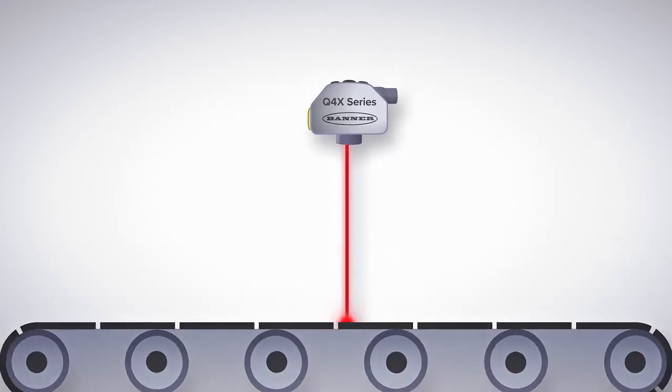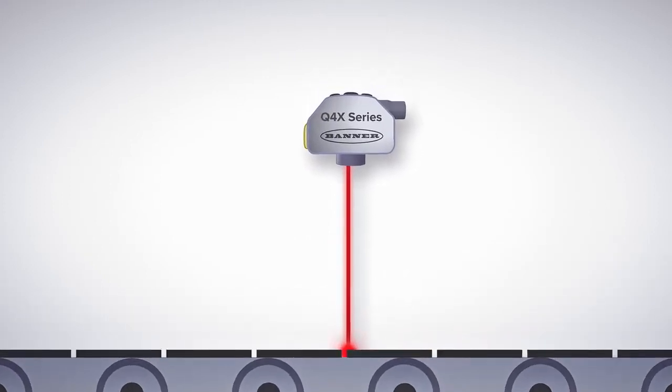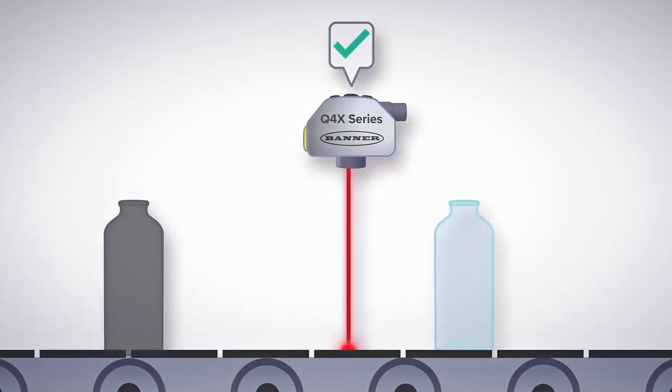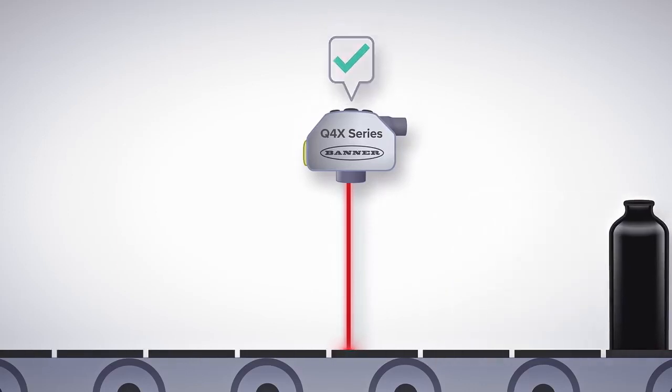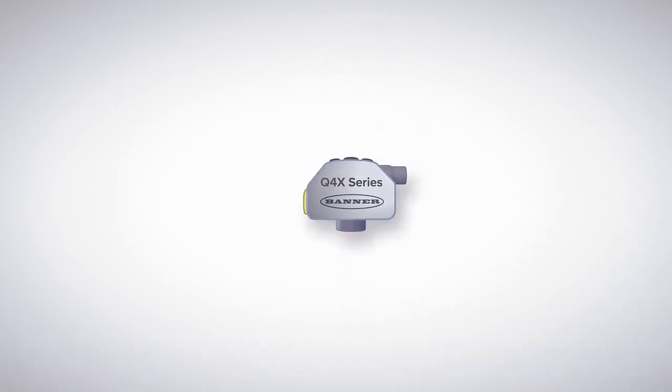Dual mode also allows smart sensors to detect targets that other sensors can't, including clear objects, low contrast applications, and very dark objects, all with one very powerful device.